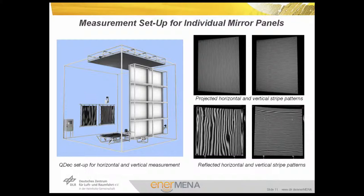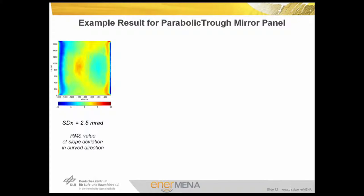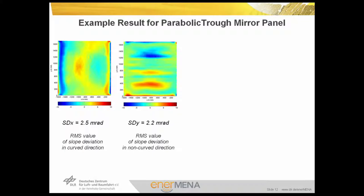We will now look at the measurement setup of deflectometry for different applications. For individual mirror panels of parabolic troughs, mirror panels can be positioned vertically at a wall or horizontally on the floor, each with a corresponding target, camera, and projector. After image processing, the result for parabolic trough mirror panels is mainly the slope deviation and curvature direction. To evaluate optical performance, not only the spatial distribution of slope errors is important but mainly its RMS value. For parabolic troughs we can also calculate slope deviation in the longitudinal direction, which is of lower importance for optical performance.